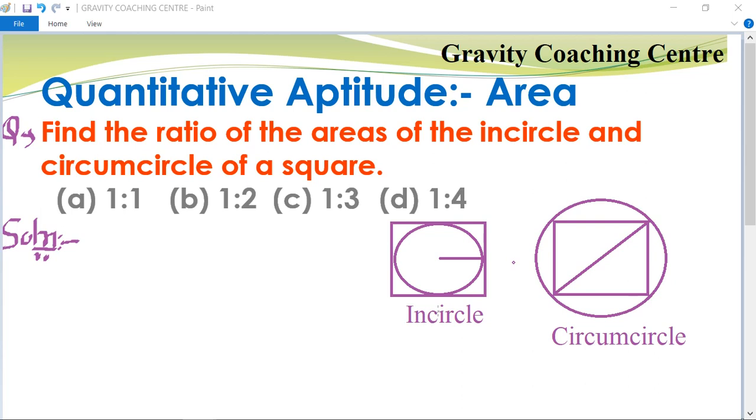For the incircle, we will see how to find the radius. Suppose let the side of the square be x. If we have taken the side as x, then the radius will be x upon 2.